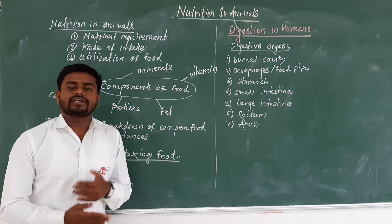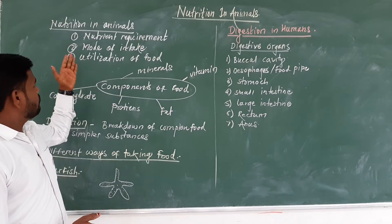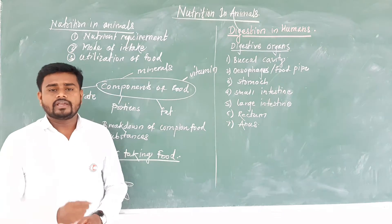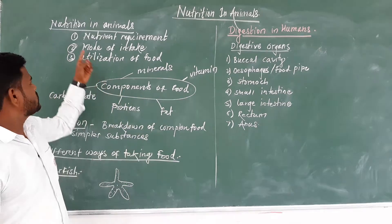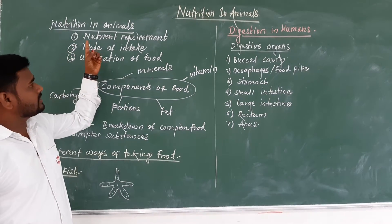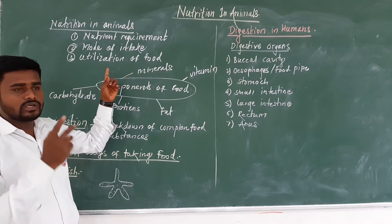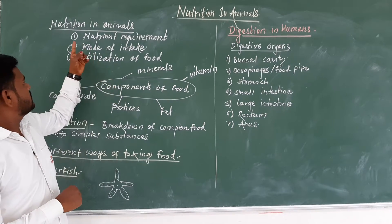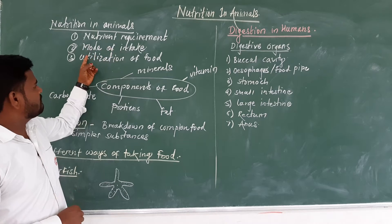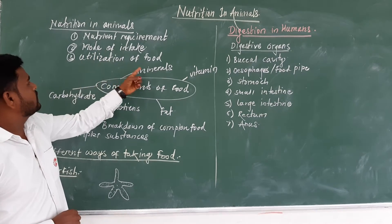How does nutrition take place in animals and what are the key things in the nutrition of animals? There are three things: first, nutrient requirement; second, mode of intake; and third, utilization of food.